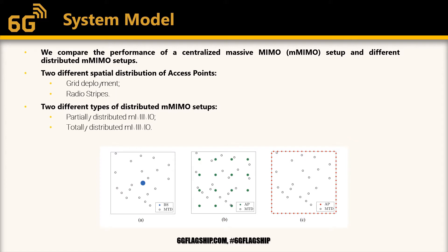In this work we compare the performance of a centralized Massive MIMO deployment and different distributed Massive MIMO deployments. In the case of centralized Massive MIMO, as you can check in figure A, there is a base station with many antennas in the center of a square area. We also consider two different spatial distributions of access points.